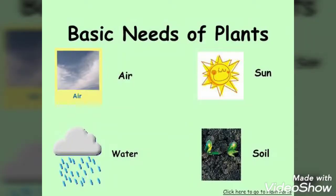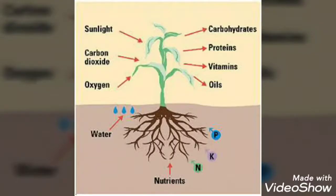A plant needs light, air, water, and soil to grow. Useful things that plants take from the soil for growth are called nutrients.